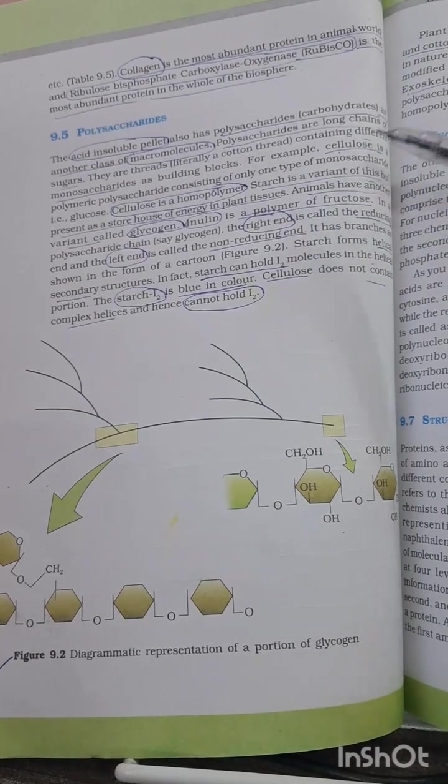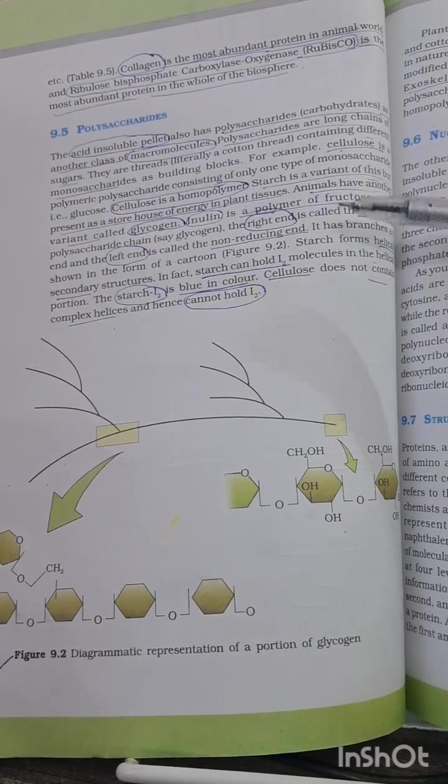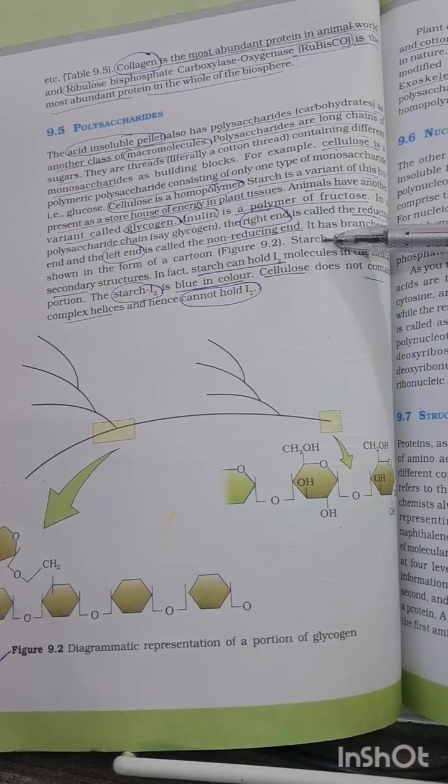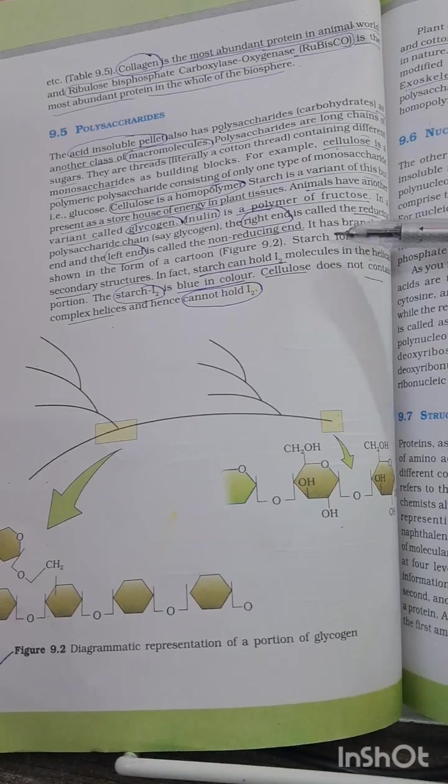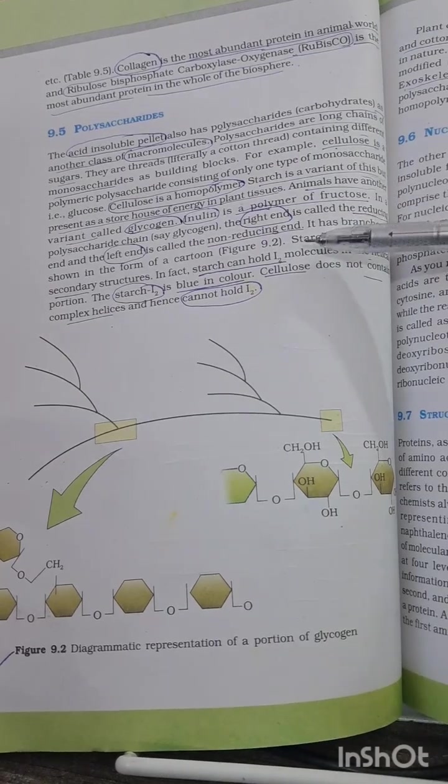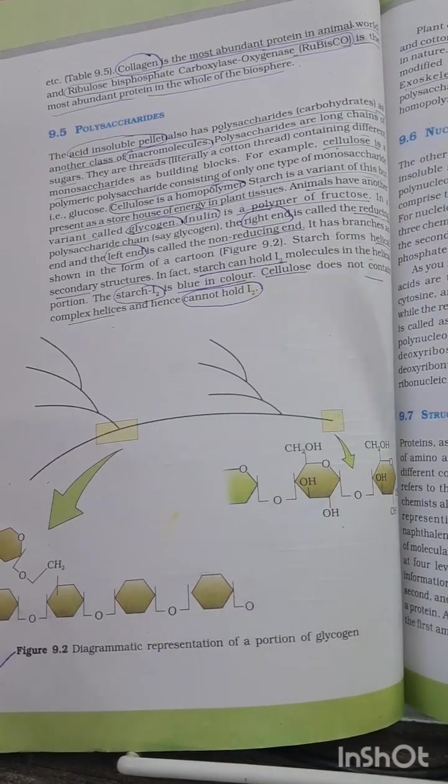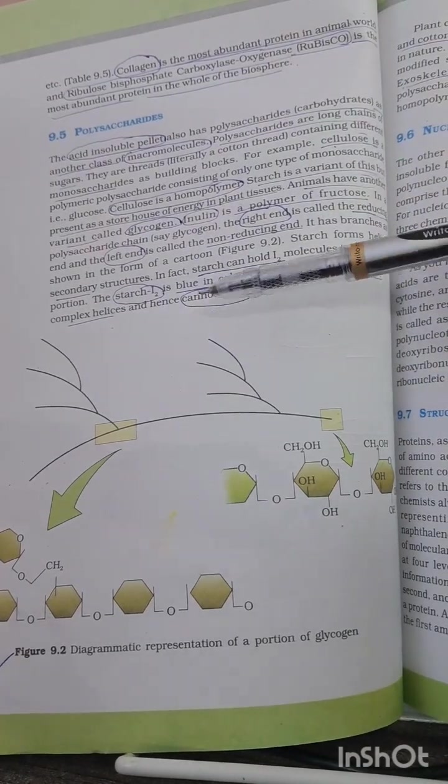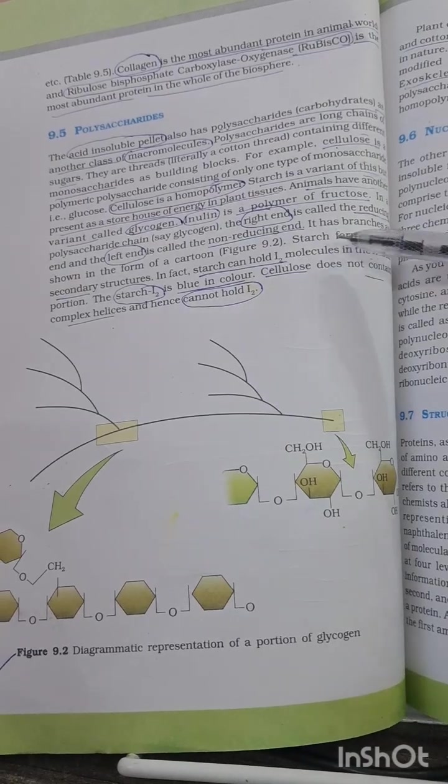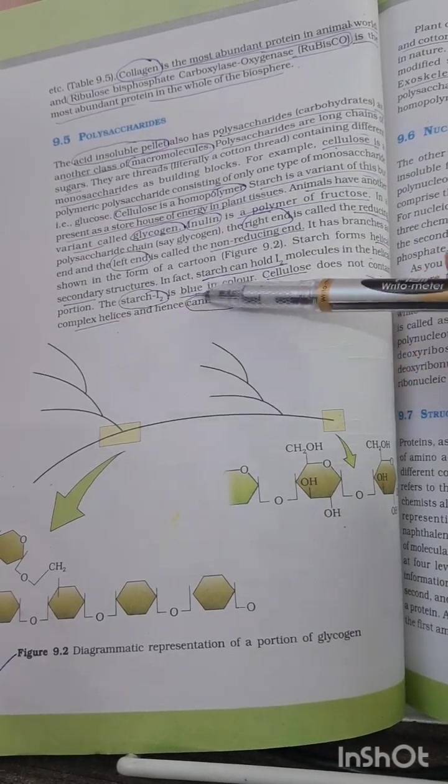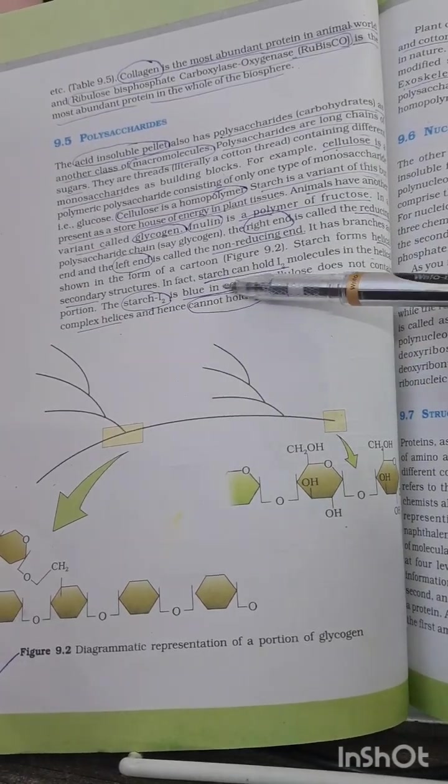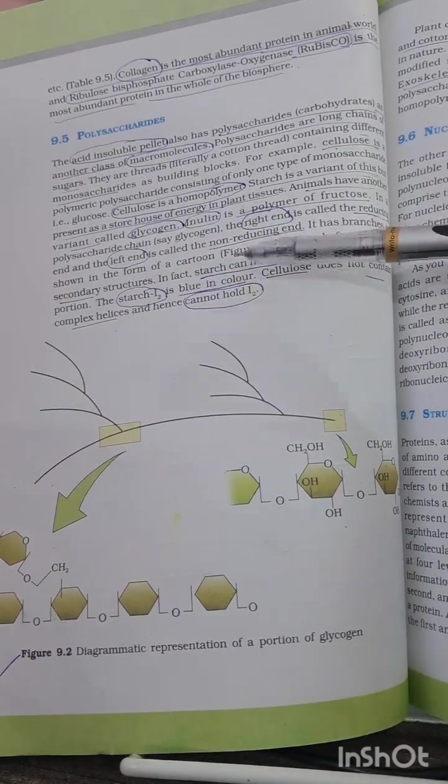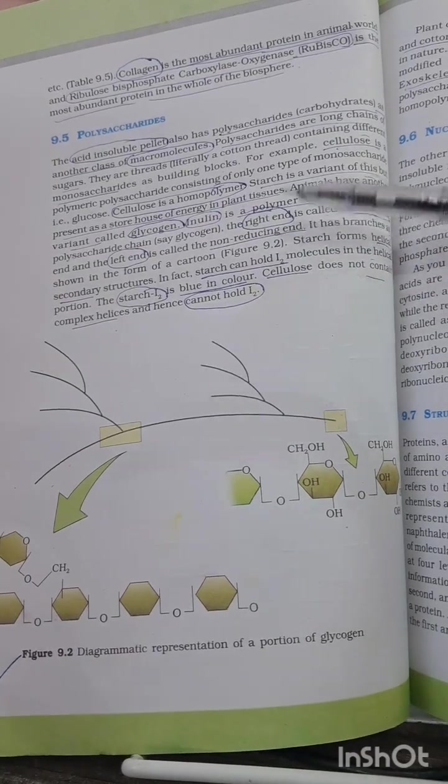Very important distinguishing factor is mentioned here between starch and cellulose. Starch forms helical secondary structures. You have to remember this sentence and half the question is solved. Starch forms helical secondary structure, that's why they can hold iodine. Starch-iodine is blue in color. Cellulose does not contain this helical structure and cannot hold iodine, so they do not form any blue color like this.